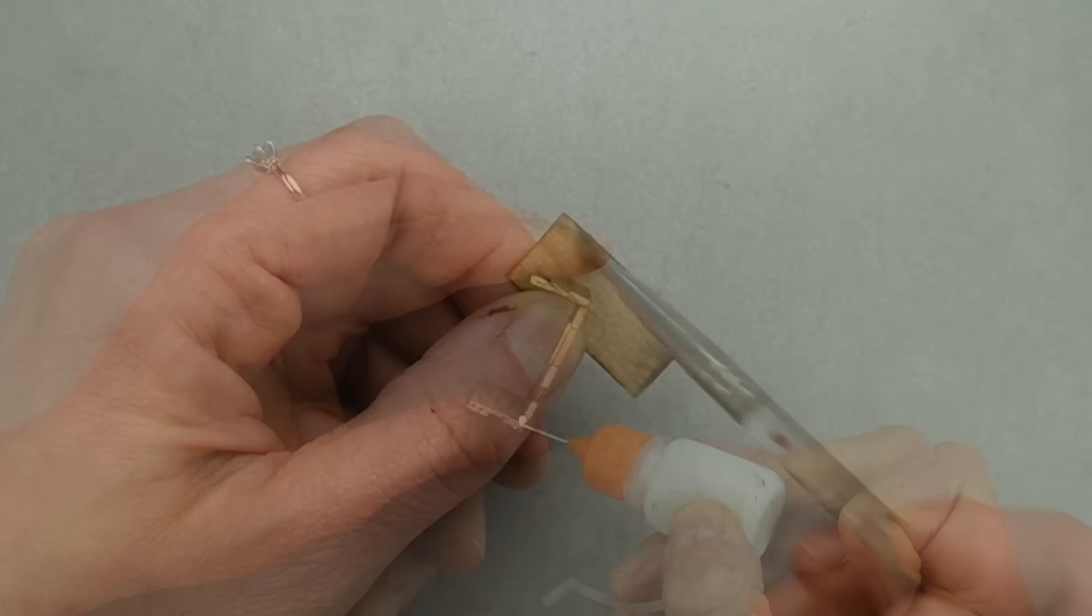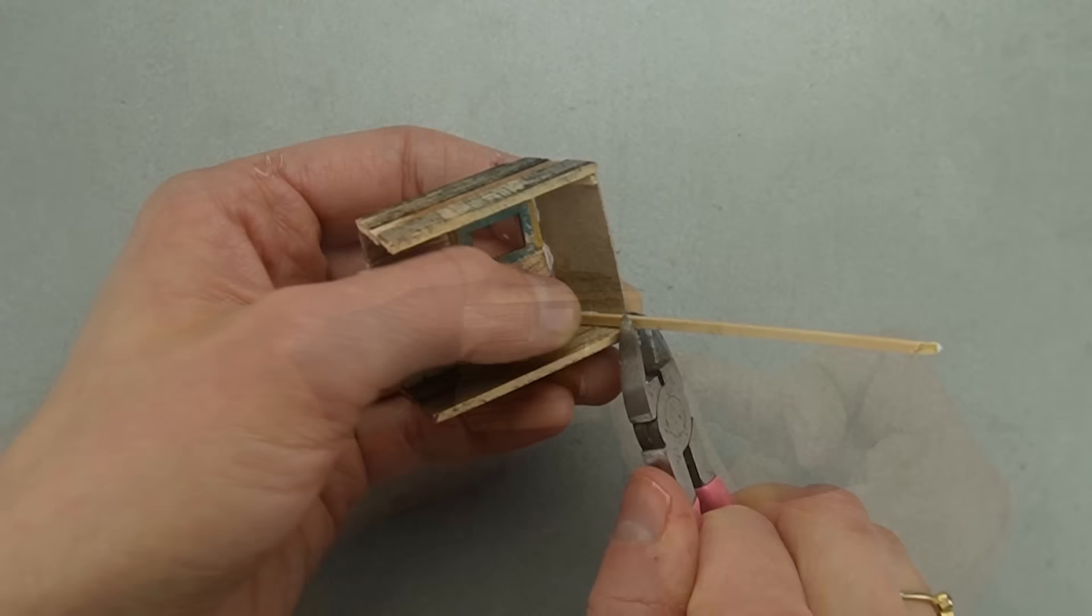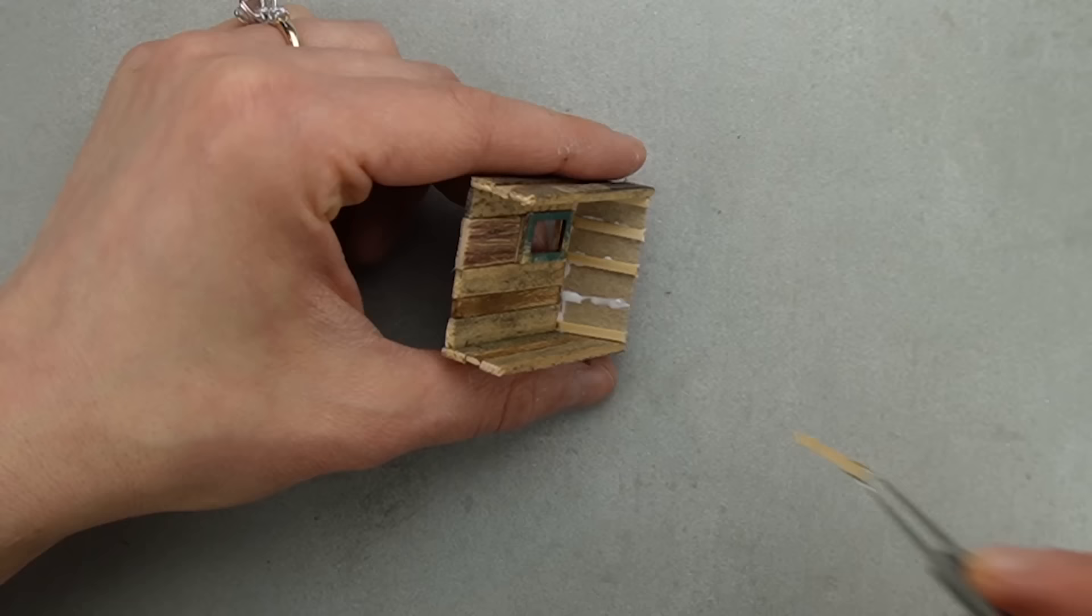Before attaching the floor, I traced the shape of the roof onto some cereal box. The flat cereal box is pretty boring, so I'm adding some pieces of coffee stir stick to the ceiling for more texture and interest.